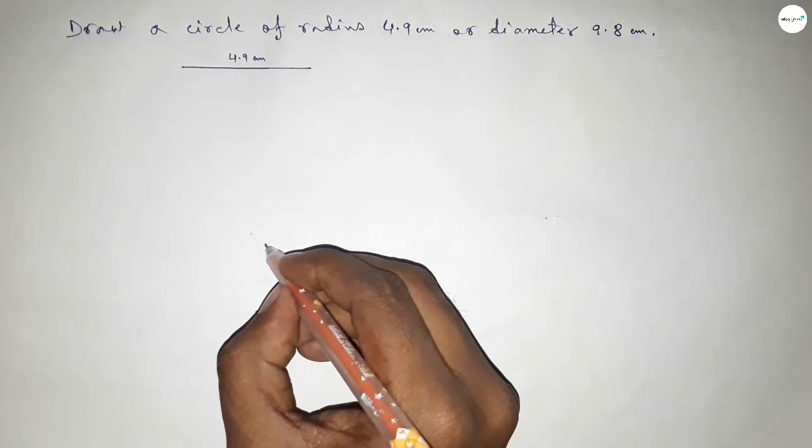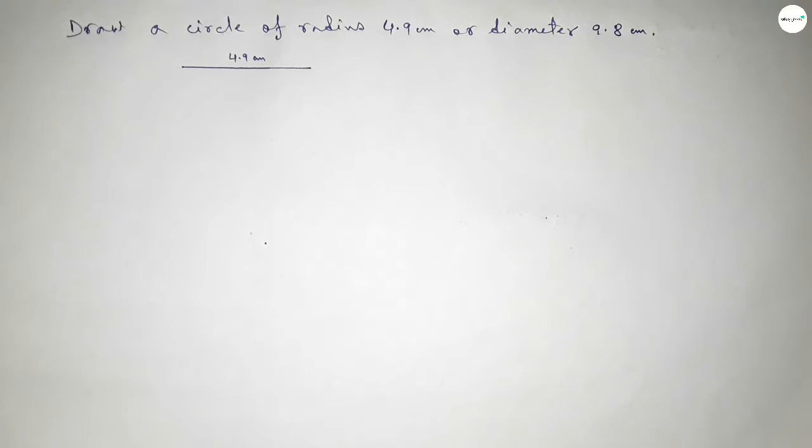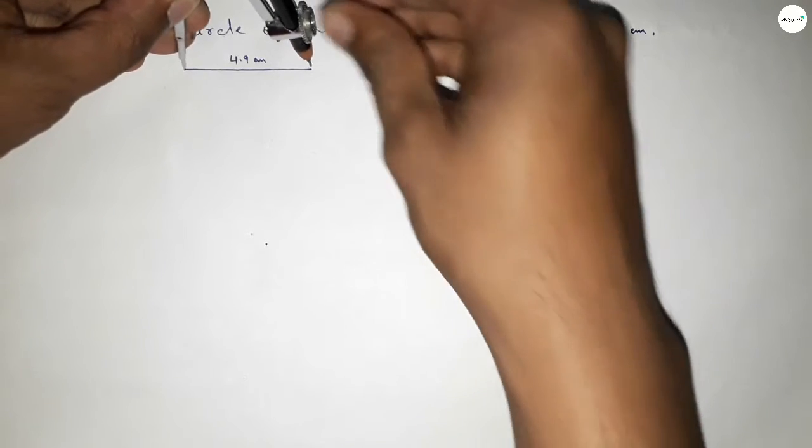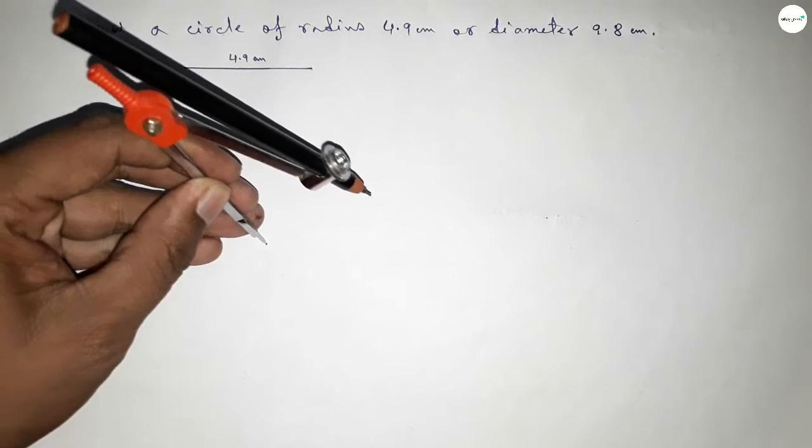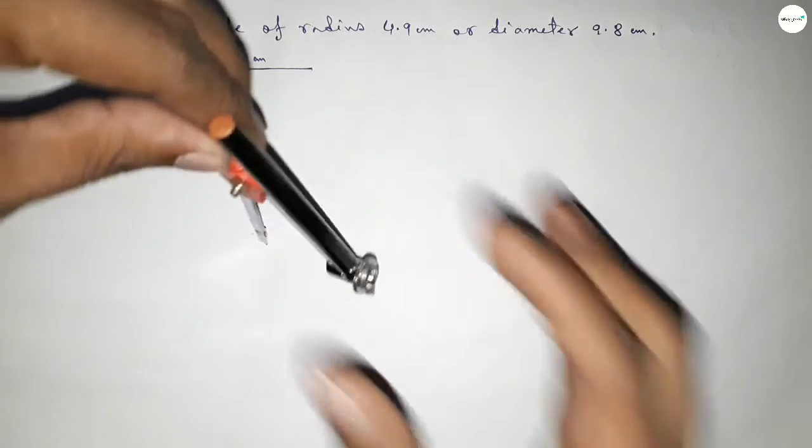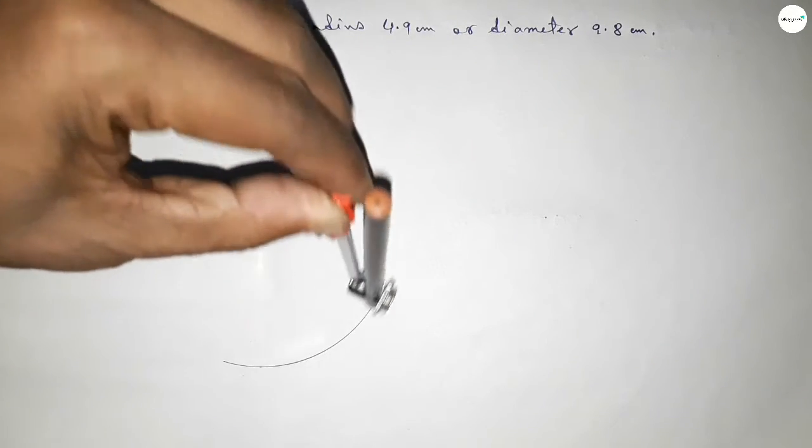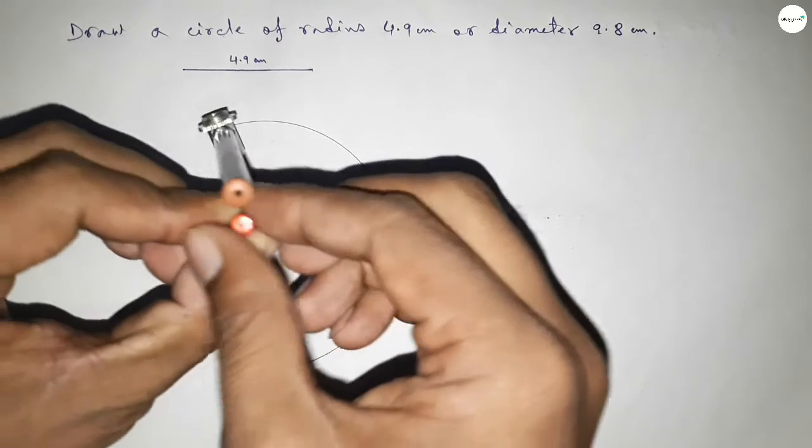Next, taking here a point. Now taking the length four point nine centimeter by using compass, and putting the compass on the point. Now drawing an arc by this way.